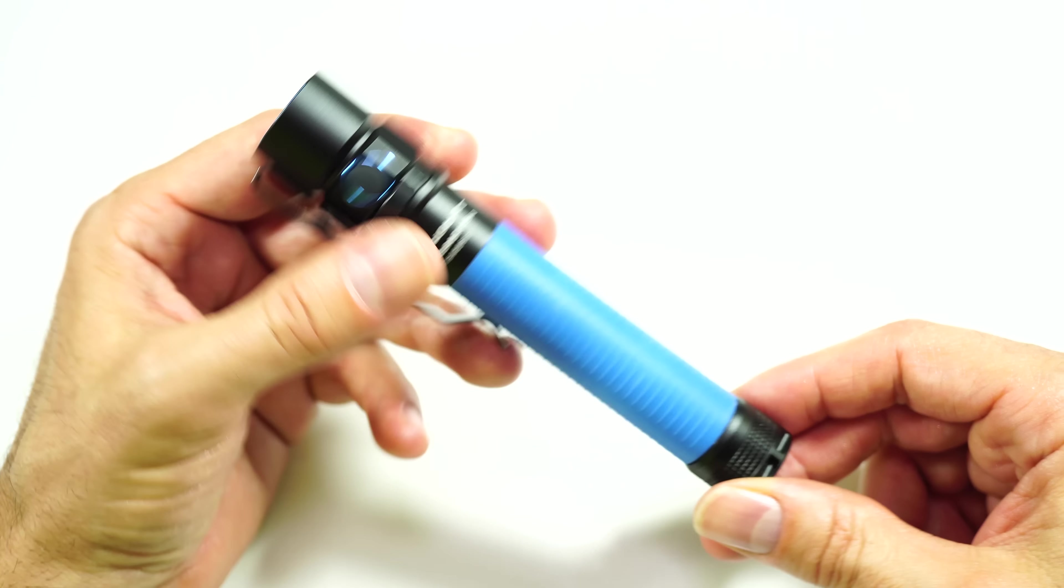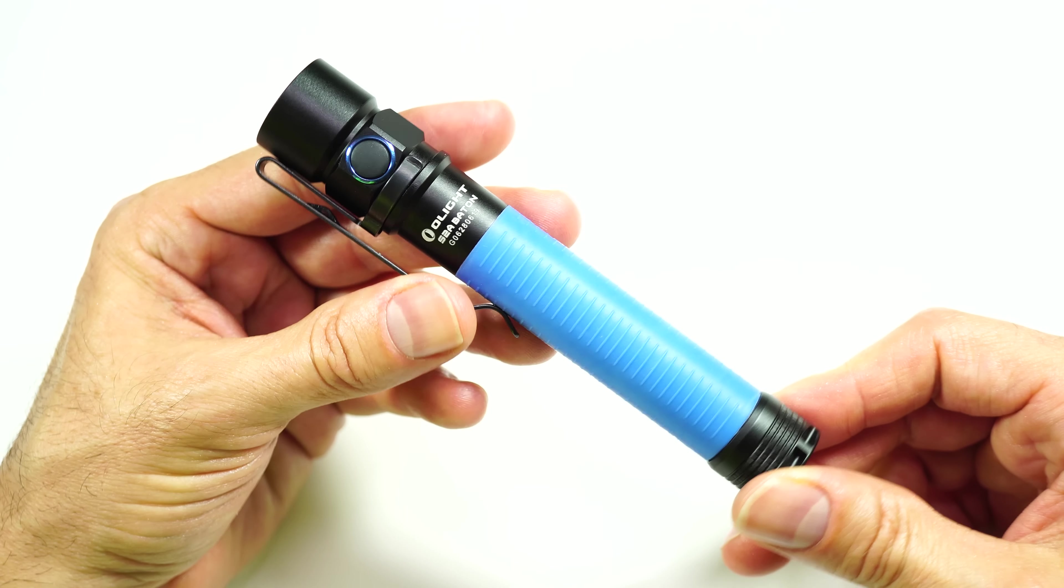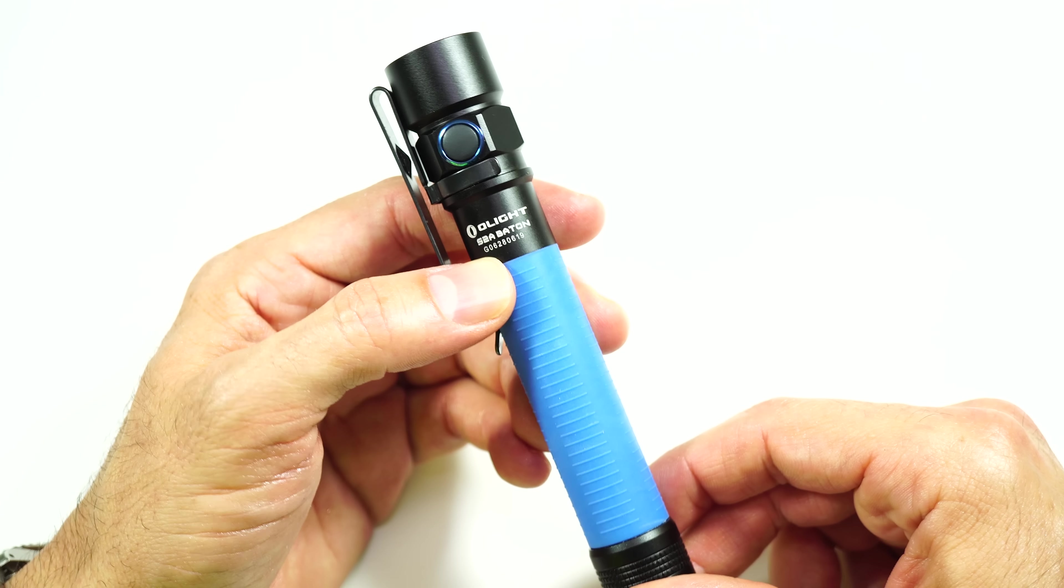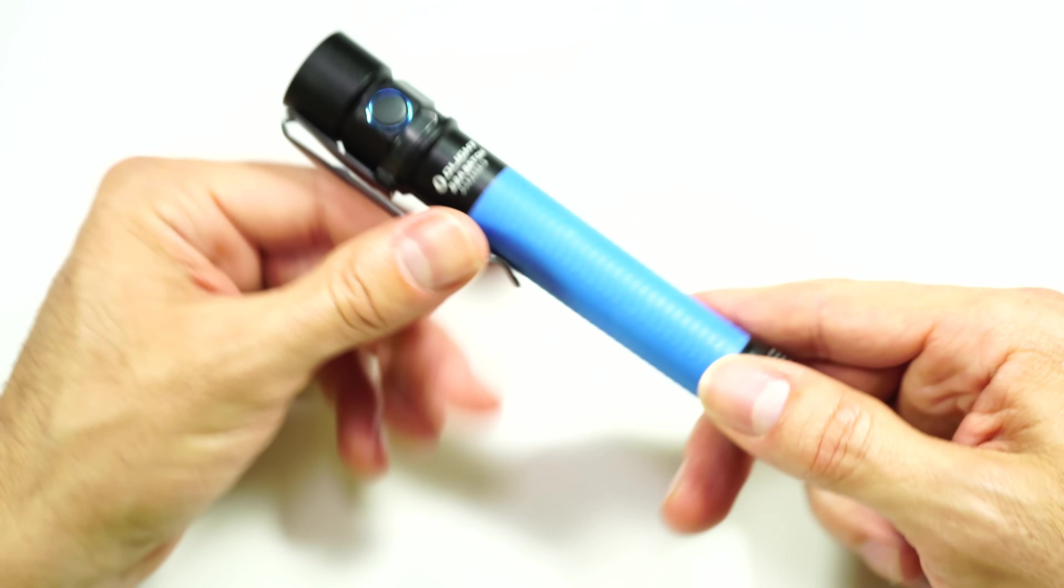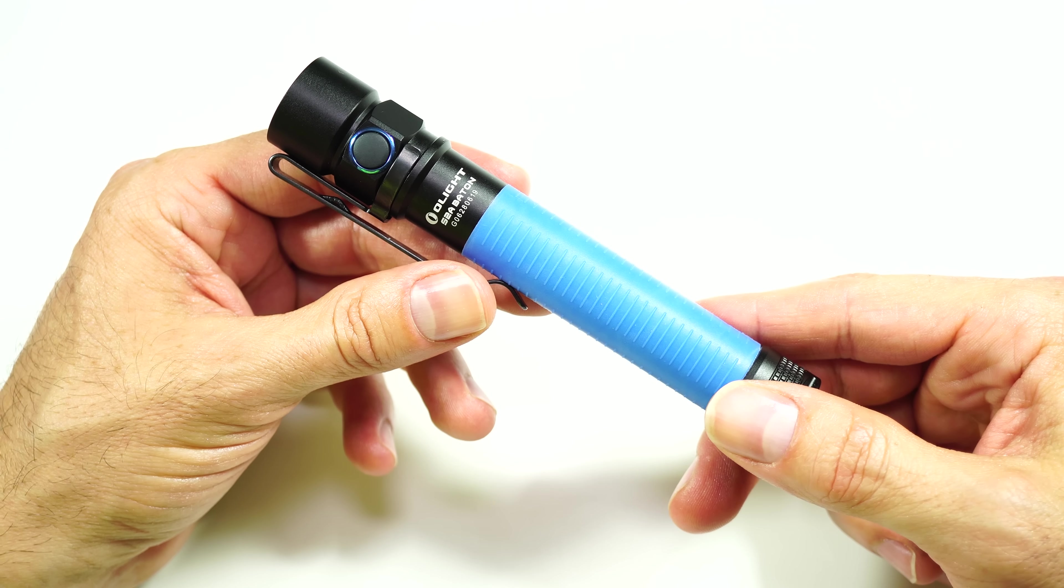So Olight sent me a couple lights to review and this is one of them. This is a brand new one from Olight, the S2A baton. This light retails for $49.95. I'll put some links down below. You can check it out.